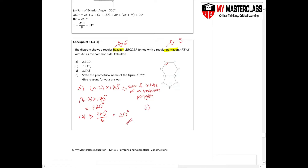Now let's look at part b — angle FAY. This is a little unique. An important thing to note: when a polygon is described as regular, it always means that all sides are equal. So the relevant sides here are the same length.